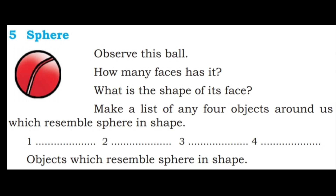Next solid shape is sphere. Observe this ball. How many faces has it? What is the shape of its face? It looks like a circle. Make a list of any four objects which resemble a sphere in shape: football, volleyball, cricket ball, sponge ball — all balls are in the sphere shape.